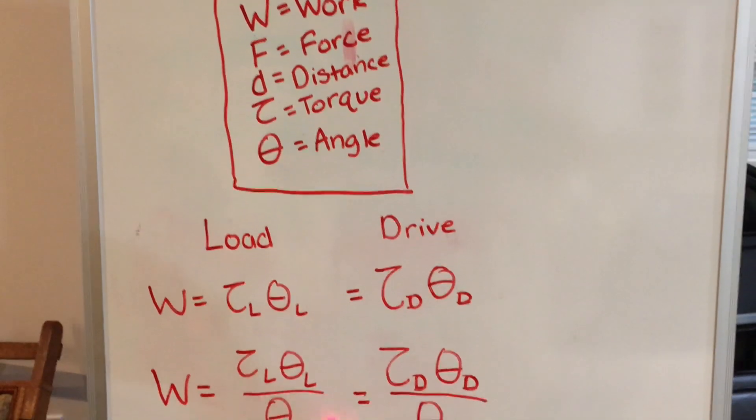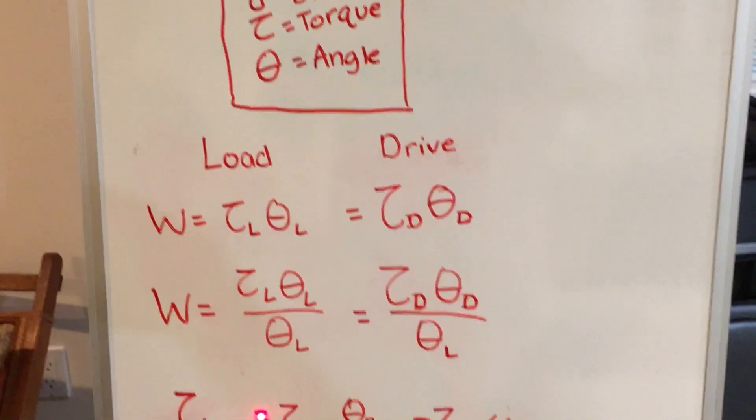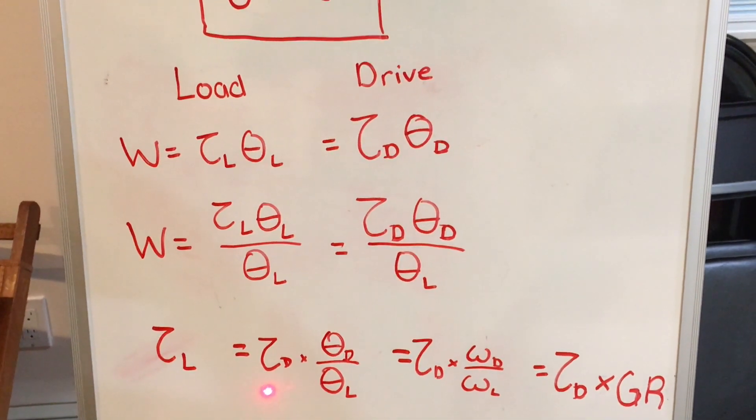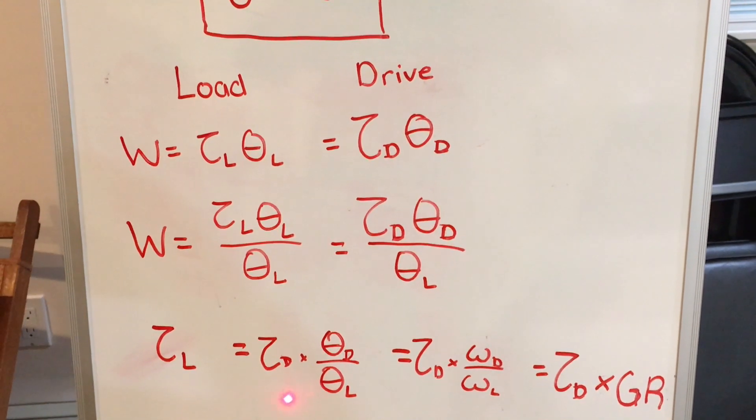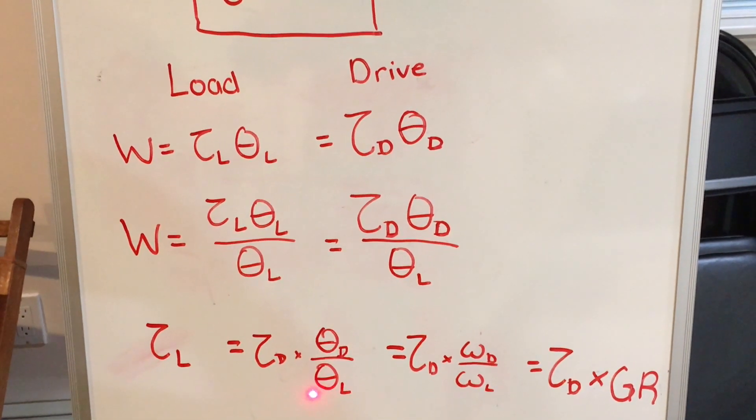If we were to divide both sides by the angle covered by the load axle, then the torque of the load axle will be equal to the torque of the drive axle times the angle covered by the drive axle divided by the angle covered by the load axle.